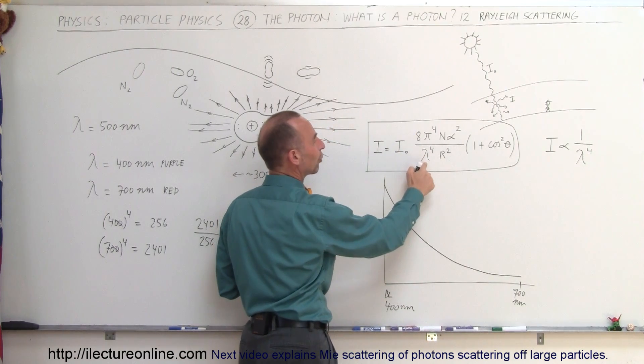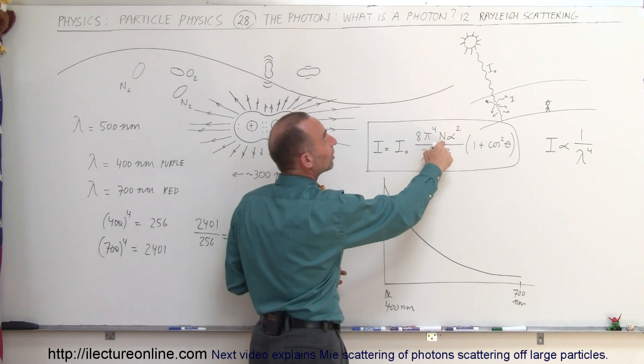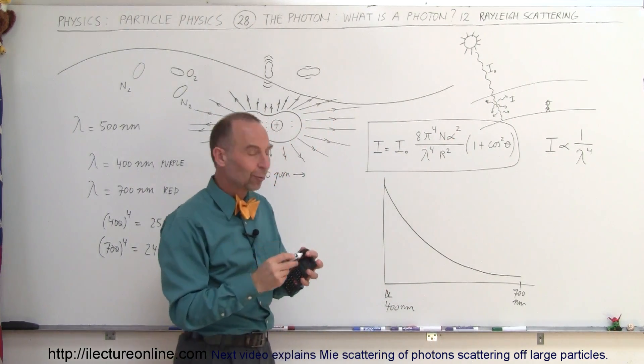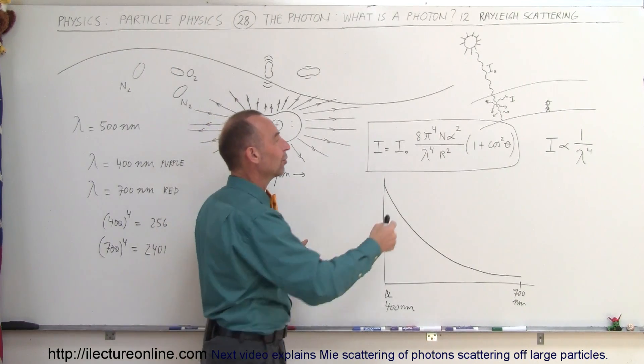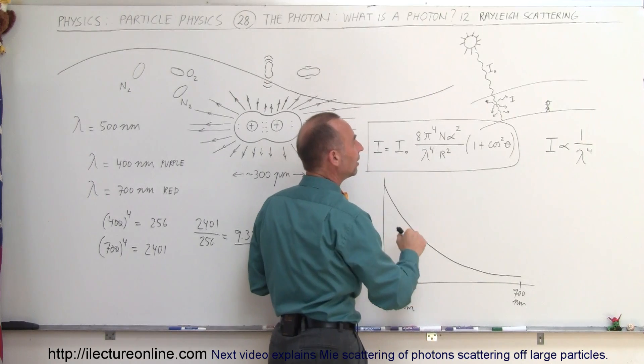Notice the 1 over lambda to the 4th factor in there. Also notice that it depends on the number of molecules in the air, of course, and how effective those molecules are at reflecting or scattering the light. So different molecules have a different proportion in which they can scatter the light.